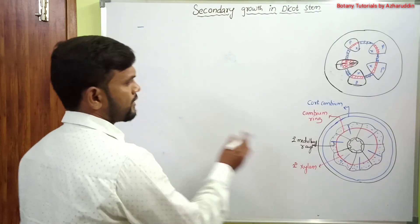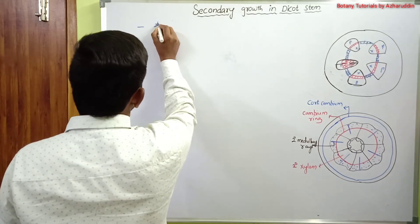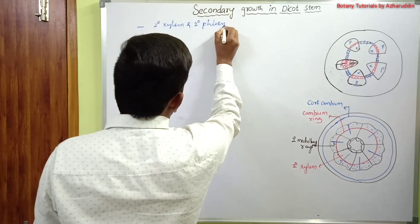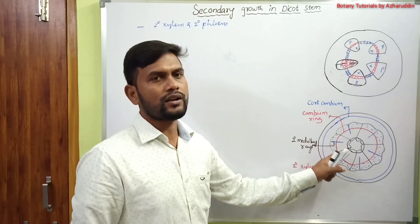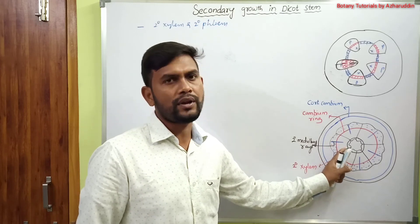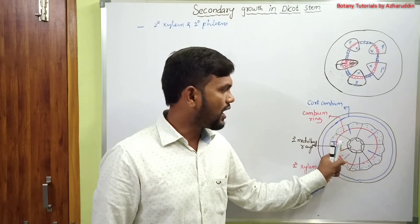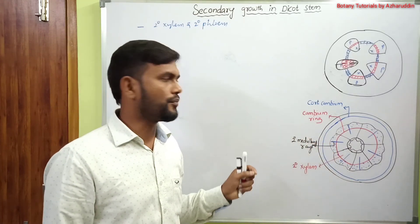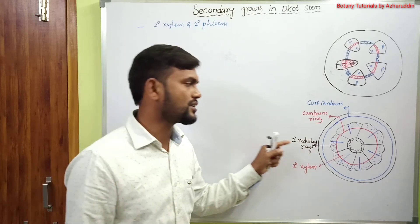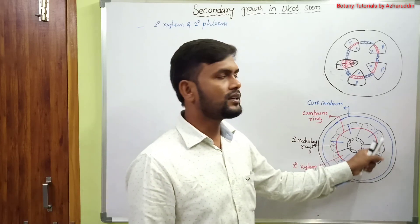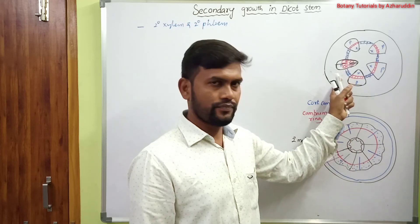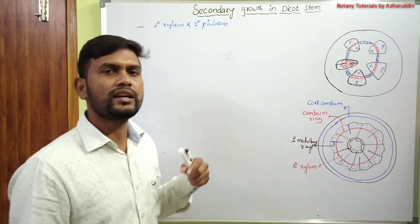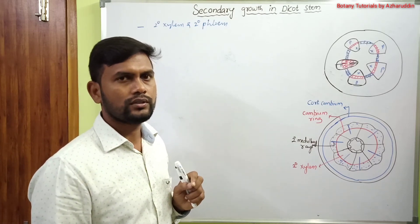In most dicots, after formation of secondary xylem and secondary phloem, the primary vascular tissues are crushed — primary xylem and primary phloem are crushed — and replaced with secondary xylem and secondary phloem. This is about intrastelar secondary growth, which occurs inside the stele. In the next class, I will explain extrastelar or cortical secondary growth. Thank you.